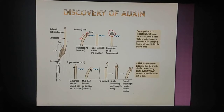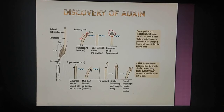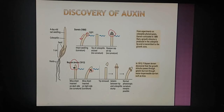He published his results in 'The Power of Movement in Plants.' Then Boysen-Jensen in 1913 inserted a mica sheet between the coleoptile tip of Avena oats and the rest of the area. No curvature or bending was observed. When the mica sheet was inserted on the illuminated side, curvature was observed.